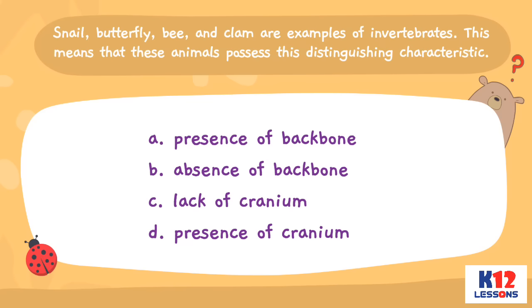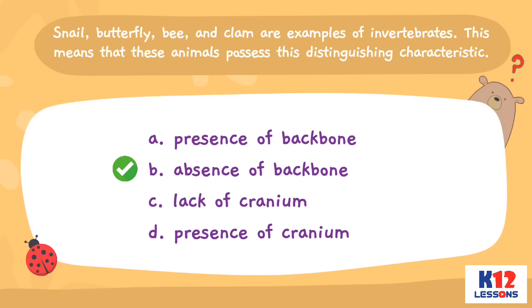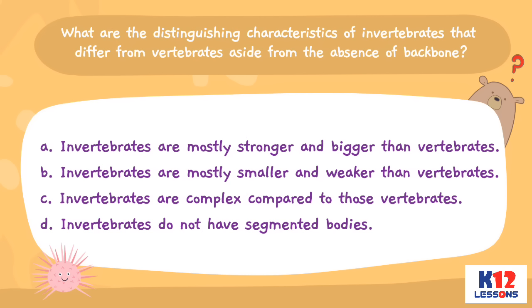Snail, butterfly, bee, and clam are examples of invertebrates. This means that these animals possess this distinguishing characteristic: A. Presence of backbone. B. Absence of backbone. C. Lack of cranium. D. Presence of cranium. What are the distinguishing characteristics of invertebrates that differ from vertebrates aside from the absence of backbone? A. Invertebrates are mostly stronger and bigger than vertebrates. B. Invertebrates are mostly smaller and weaker than vertebrates. C. Invertebrates are complex compared to vertebrates. D. Invertebrates do not have segmented bodies.